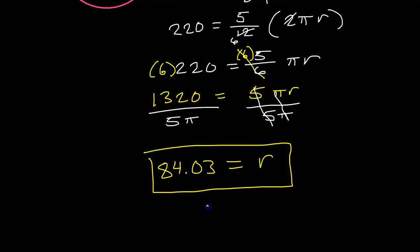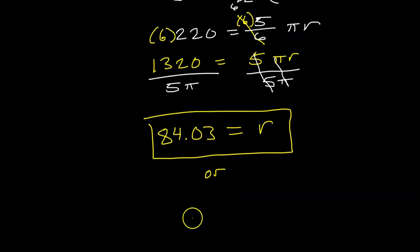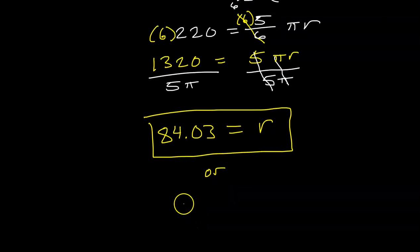If you wanted an exact answer, instead of rounding to a decimal, the only thing we could do is we can go ahead and divide 1,320 by 5. And that's 264. So if I wanted an exact answer, it would be 264 over π. So this is an exact expression for the radius.